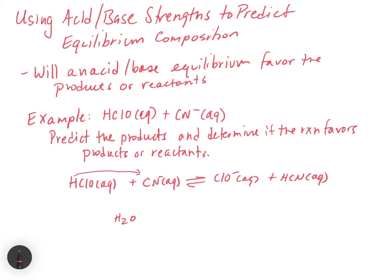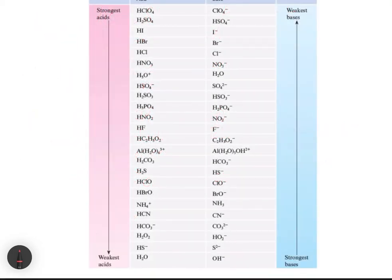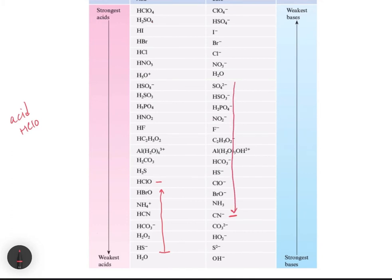What we have to do is go look at the acid-base chart to figure that out. Looking at the chart, we can mark off where our acids and bases are. We have HClO here, and we have CN⁻ down here. We have to see what is the strongest acid present in solution and what is the strongest base. Since we have water around, our strongest acid is going to be HClO — so HClO is our acid, not water.